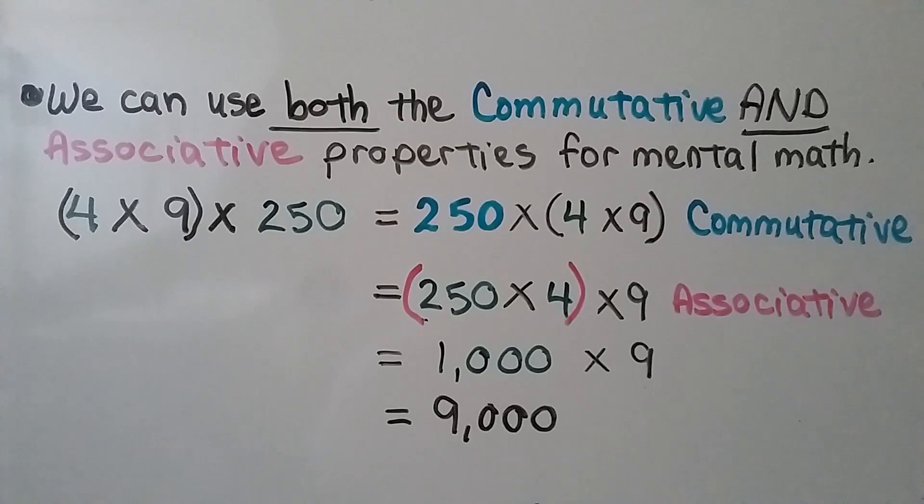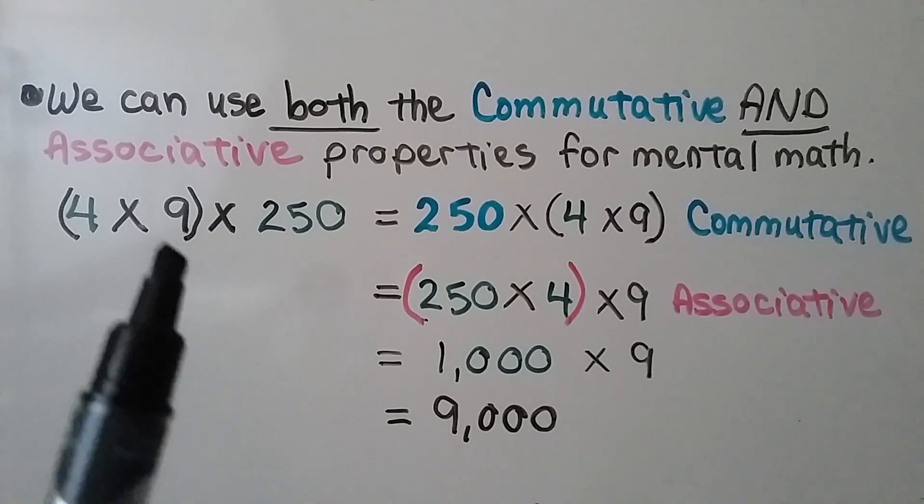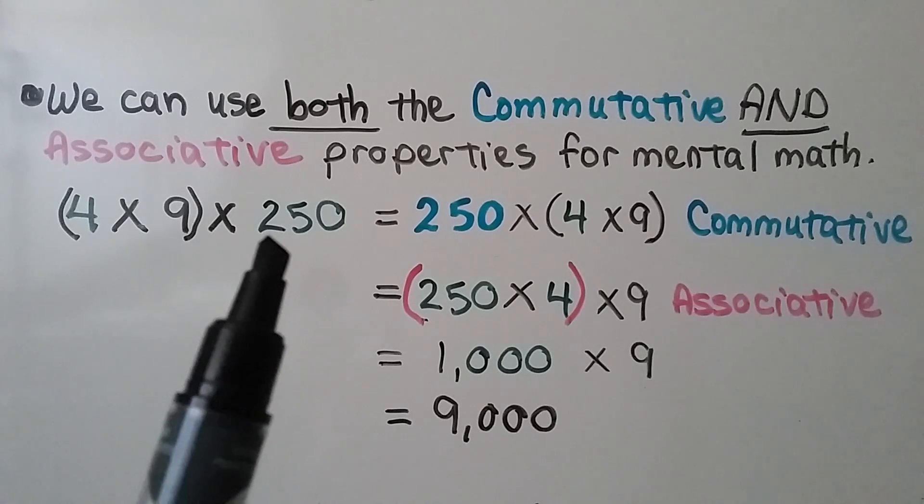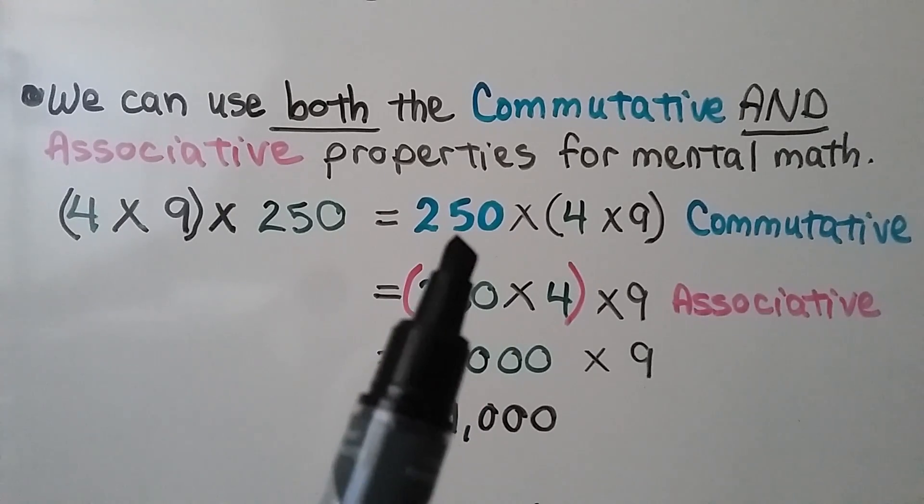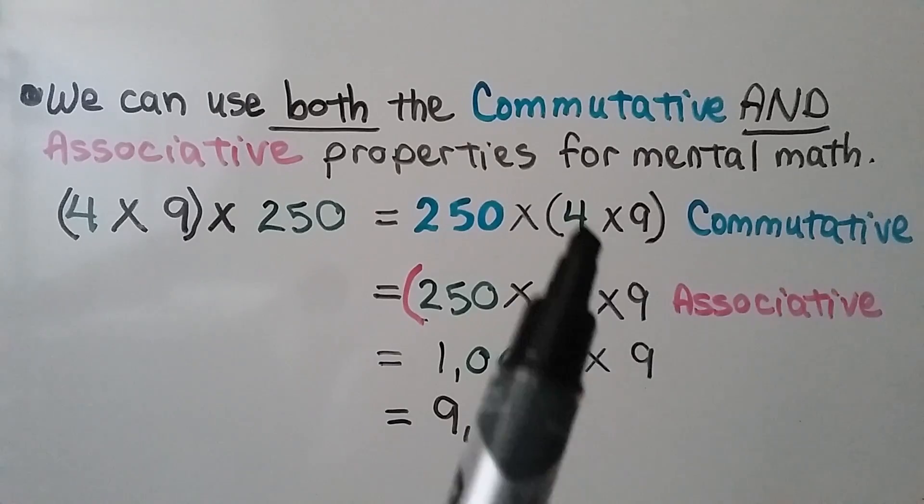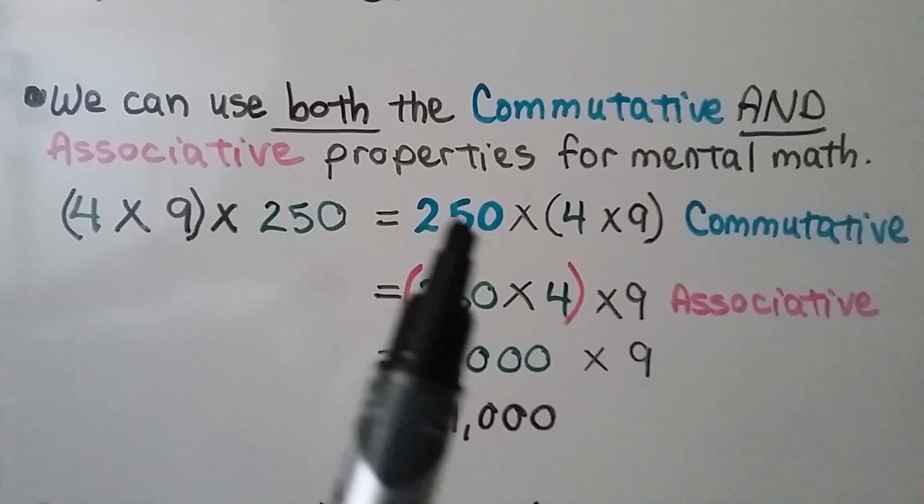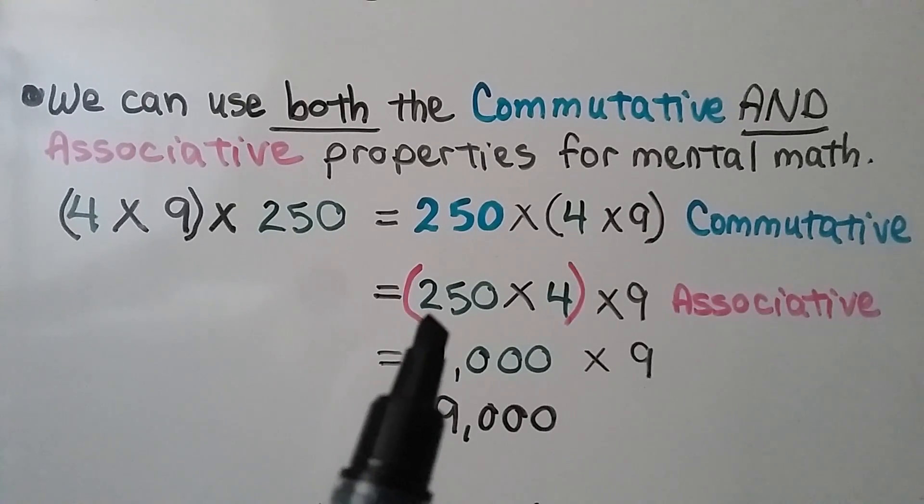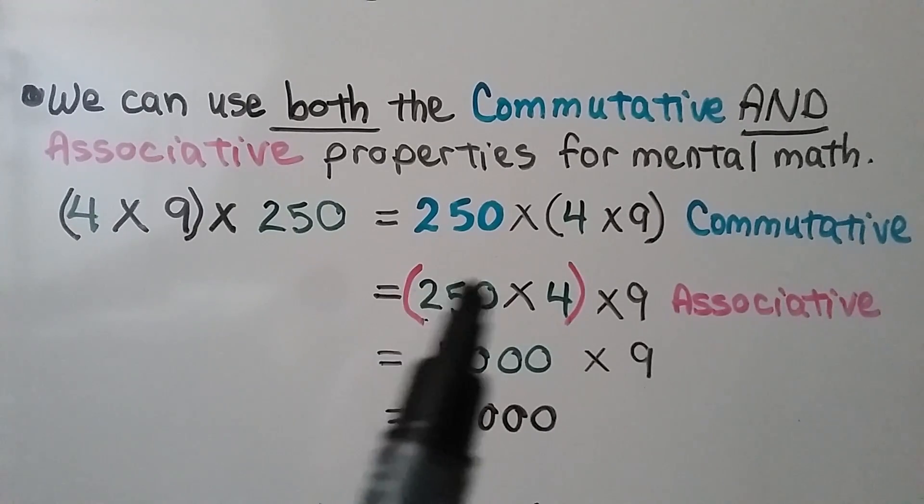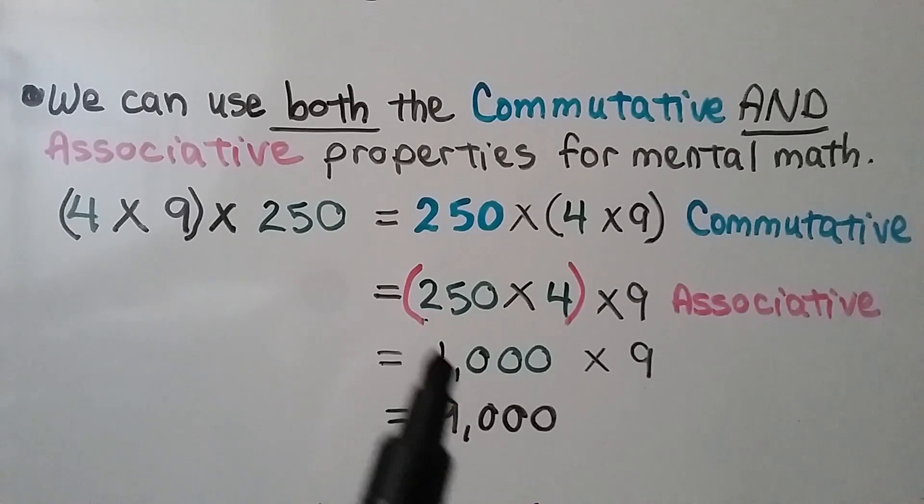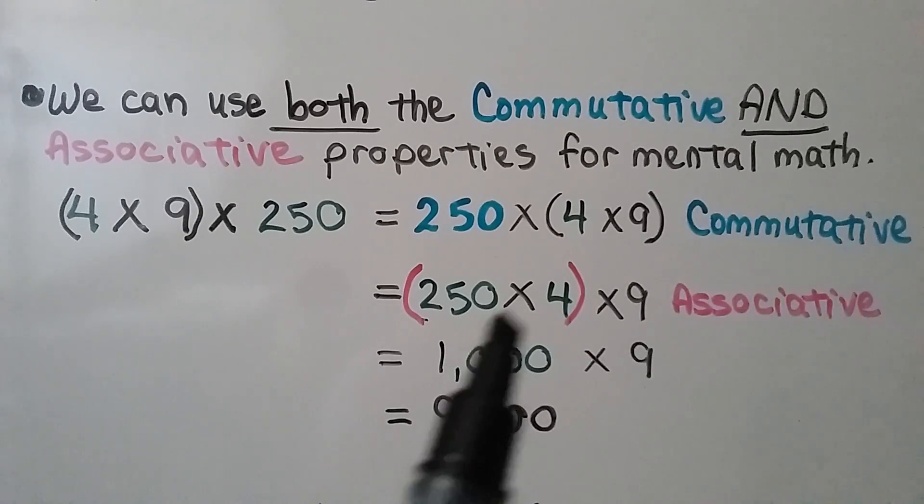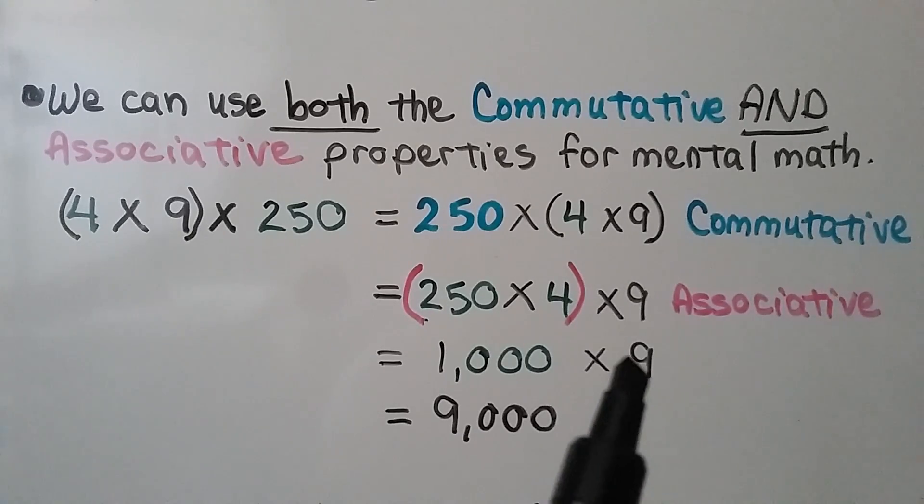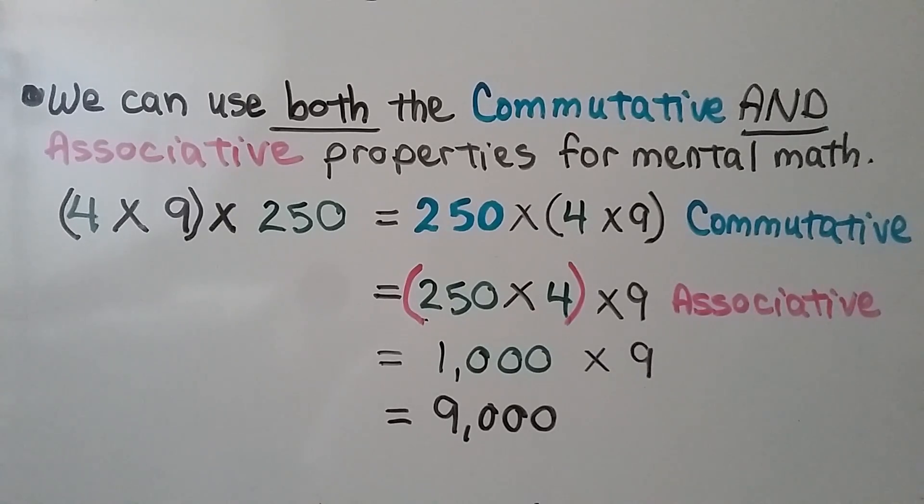We can use both the commutative and associative properties for mental math. We have 4 times 9 times 250. Using the commutative property, we'll put the parentheses back here and the 250 right here. Then we'll use the associative property. We change the grouping so we have 250 times 4, which is 1,000. Now we can multiply it by 9 very easily mentally. We get 9,000.